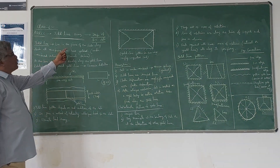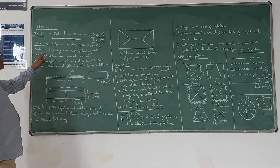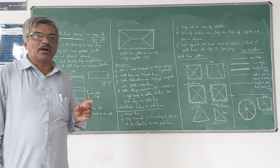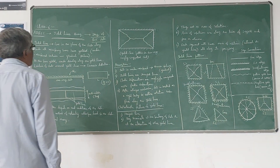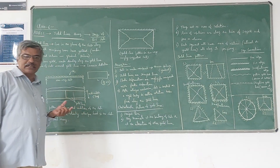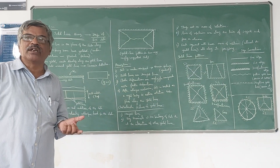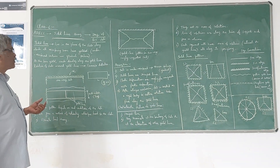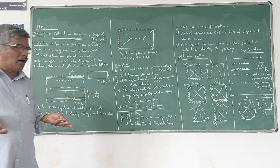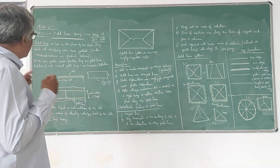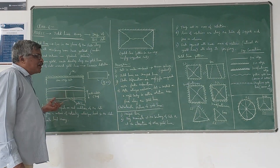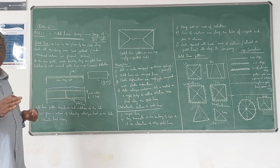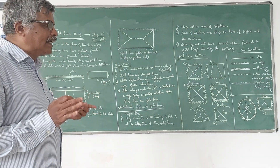A yield line is a line in the plane of the slab around which all reinforcing bars have yielded. That means if all the reinforcement bars provided in the RCC slab are stressed up to the yield stress value — for example, if we are using Fe415, the yield stress value is 415 N/mm² — if all the reinforcement bars have reached that value of stress, we say that a yield line will form in the slab.